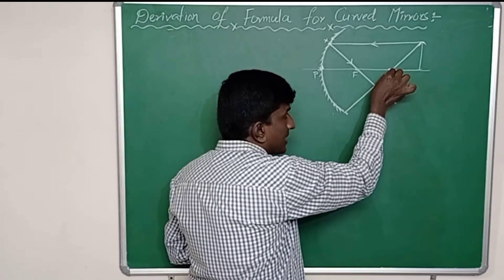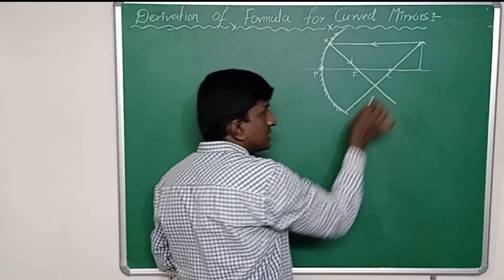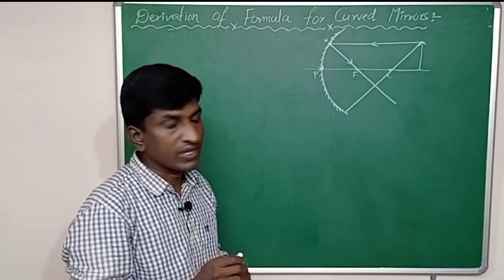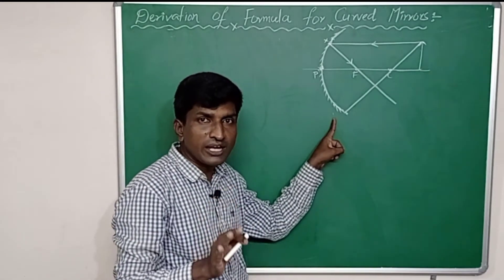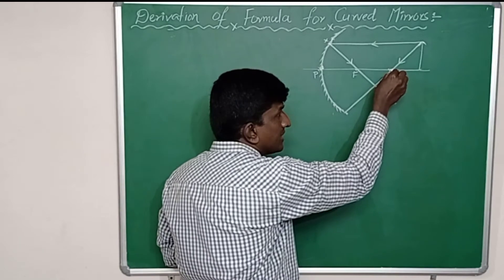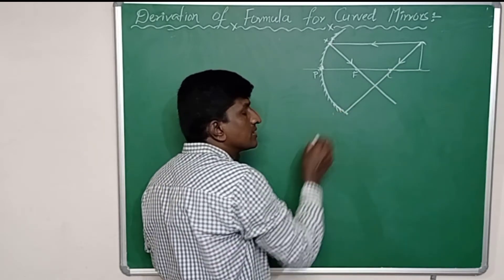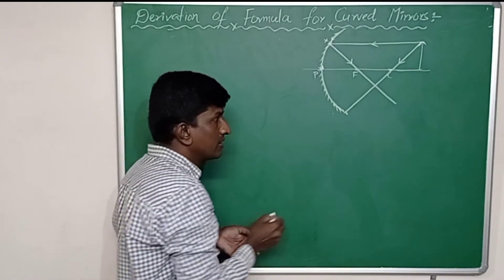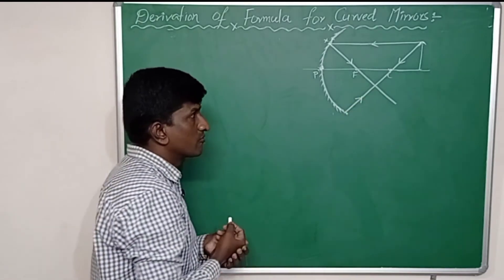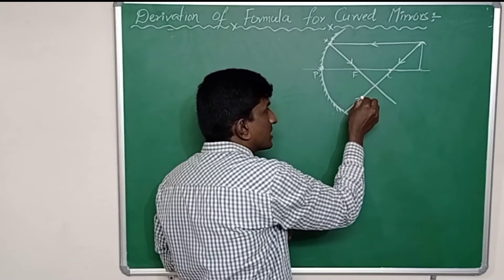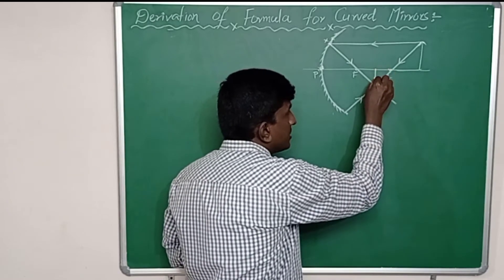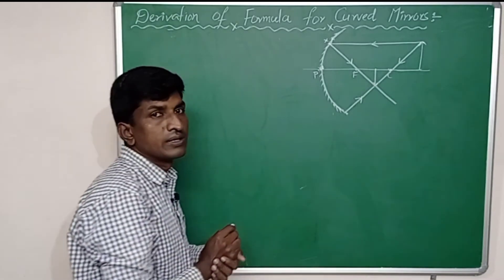The second light ray passes through the center of curvature and hits the curved surface. The light ray passing through the center of curvature travels along the radius of curvature, which is the normal line for curved surfaces. Since the incident ray travels along the normal, after reflection it bounces back along the same path. The two reflected rays intersect, and that is where the image is formed.